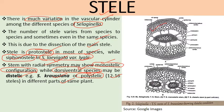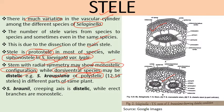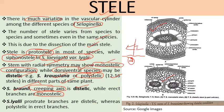In this photograph: monostelic condition shows a single stele, and distelic condition shows two steles. In Selaginella brownii, the prostrate creeping axis is distelic while erect branches are monostelic. In Selaginella lilii, prostrate branches are distelic having two vascular bundles, while erect branches are polystelic — having more than two steles.